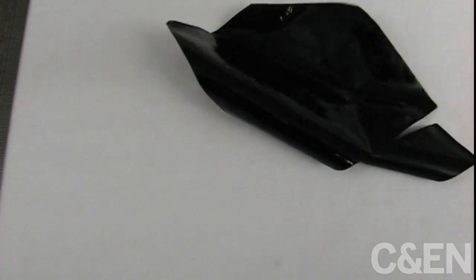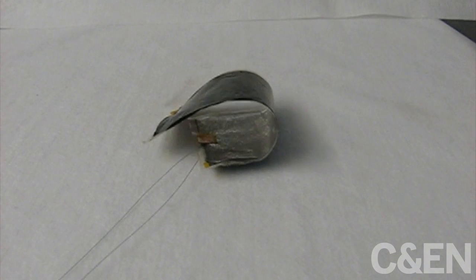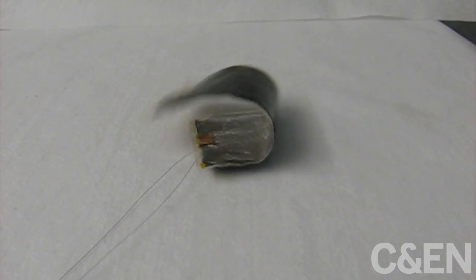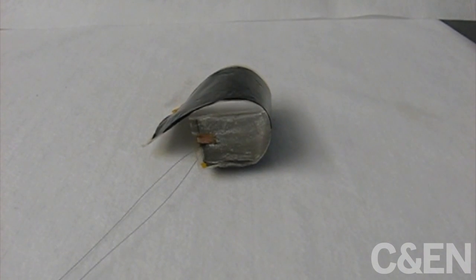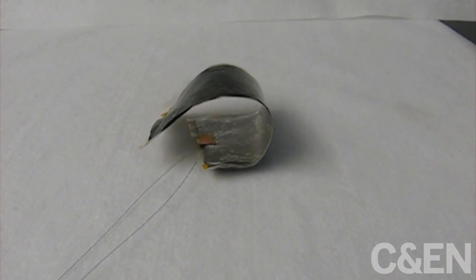These antics translate into the continuous motion you see. But all this motion isn't just for show. The MIT team attached a substance called a piezoelectric and some wires to the polymer. That piezoelectric helped the researchers convert the mechanical energy of the polymer's movements into electrical energy that they directed into a circuit.